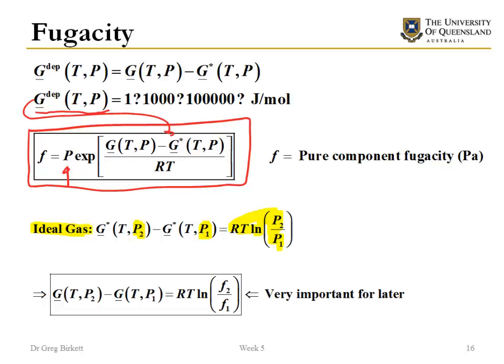If instead we've got a real gas, then we can calculate the difference in Gibbs free energy between P₂ and P₁ as RT times the log of fugacity of state 2 divided by the fugacity of state 1. This is really useful and we'll use this a lot in phase equilibrium and reaction equilibria later on.